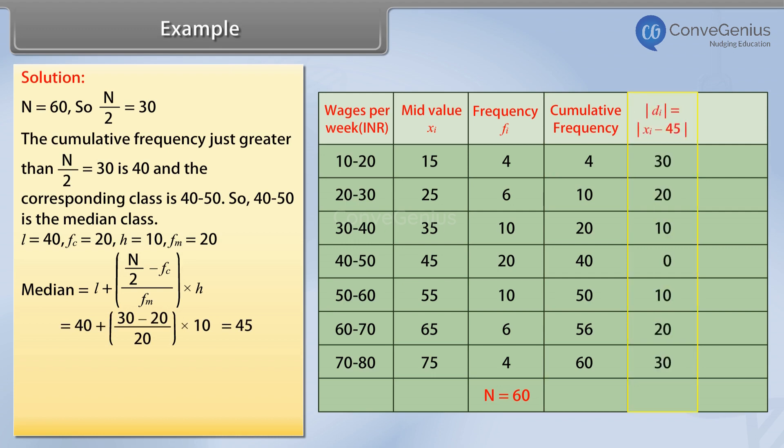In the fifth column, we find the absolute values of the difference between xi and median, that is 45, and the absolute values are denoted by di.